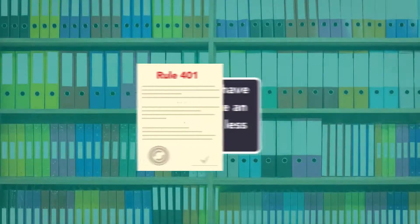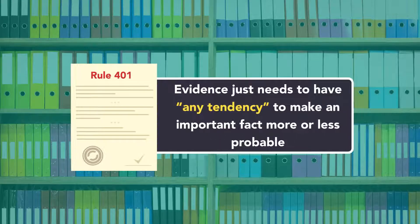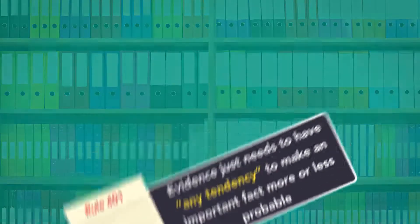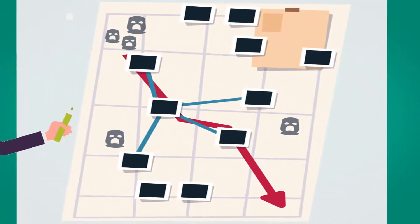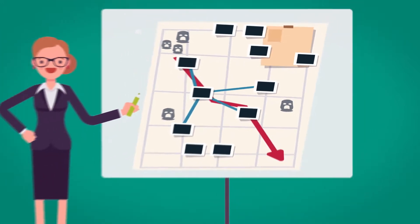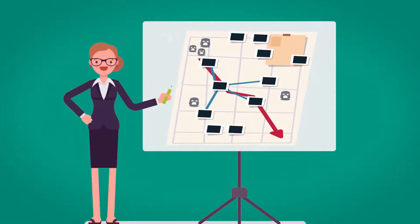The rule's language states that the evidence just needs to have any tendency to make an important fact more or less probable. This means if a piece of evidence is even tangentially related to a part of the case, it's likely relevant.